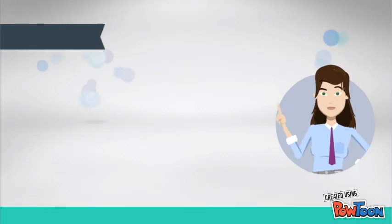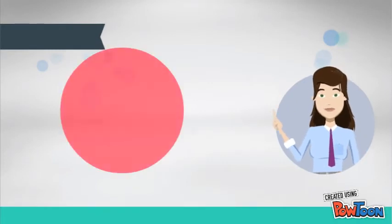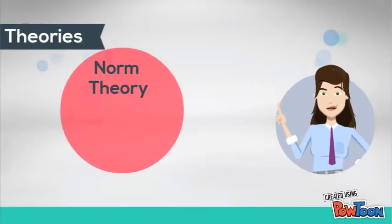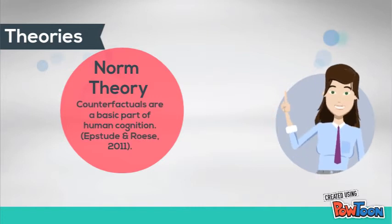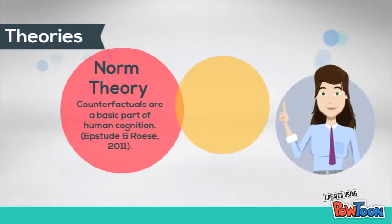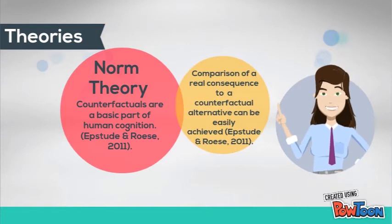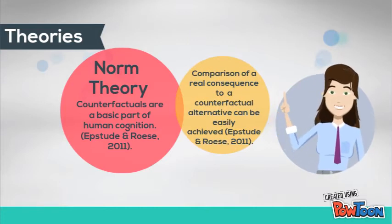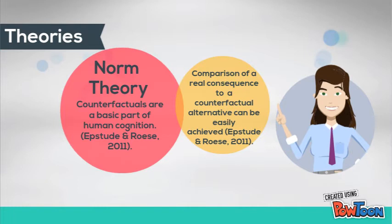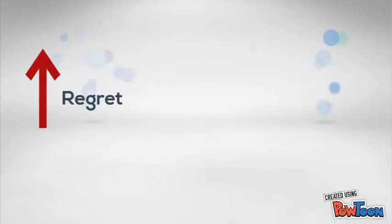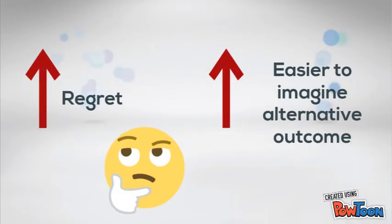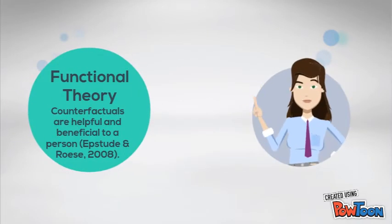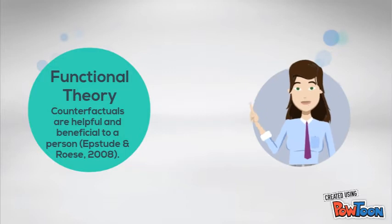Counterfactual thinking can be described by two theories: the norm theory and the functional theory. According to the norm theory, counterfactuals are a basic part of human cognition. You can very easily compare the consequence of a real solution with an alternative. When you experience greater feelings of regret, it will be easier to imagine an alternative outcome.